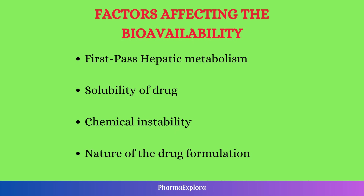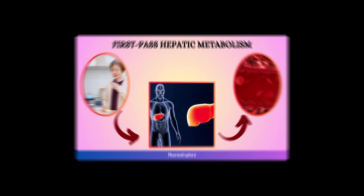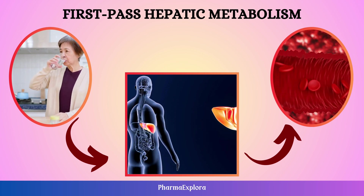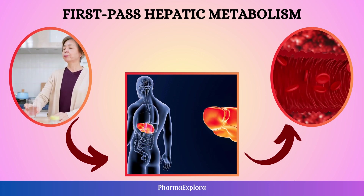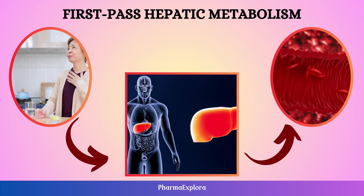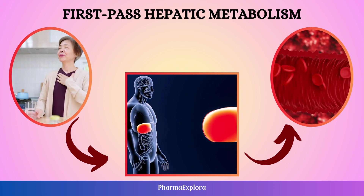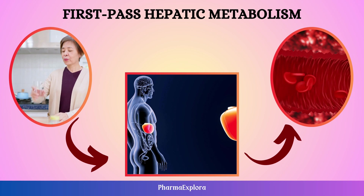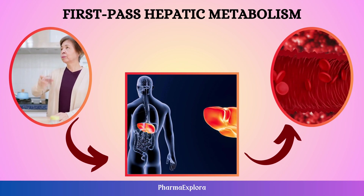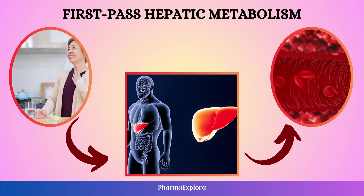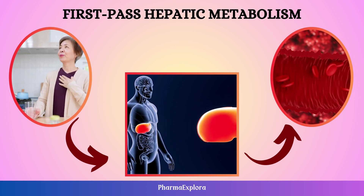Now let's look into the factors which influence bioavailability. First: first-pass hepatic metabolism. When a drug is taken orally and absorbed in the stomach and intestines, it first goes to the liver before entering the bloodstream. The liver can alter the drug's structure, which decreases the quantity of the original drug that makes it to the rest of the body. Some drugs, like propranolol and lidocaine, undergo significant biotransformation during a single passage through the liver.